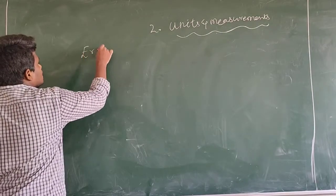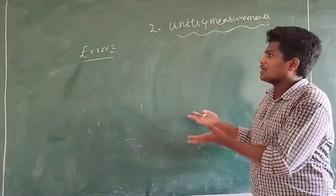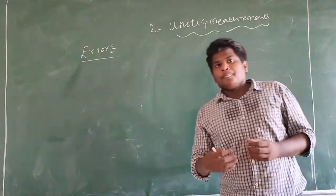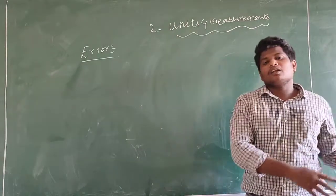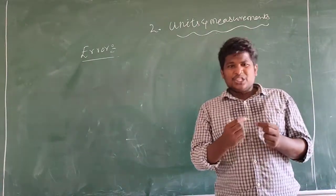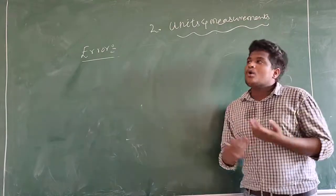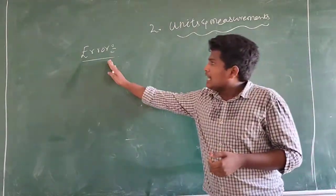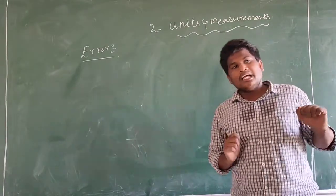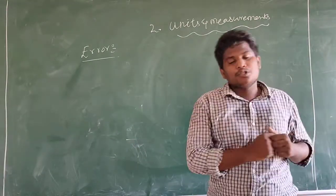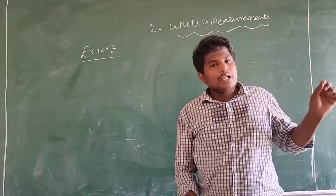The first class is about error. Errors are normalized and we make mistakes — by mistake, by instrument — one value becomes an error. For example, error is the difference between a real value and a true value. The error is the difference between a true value and a measured value.